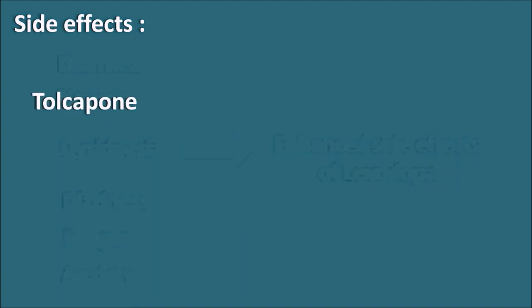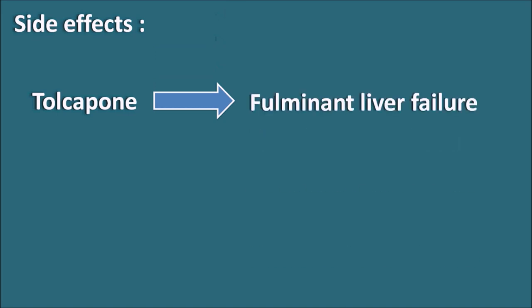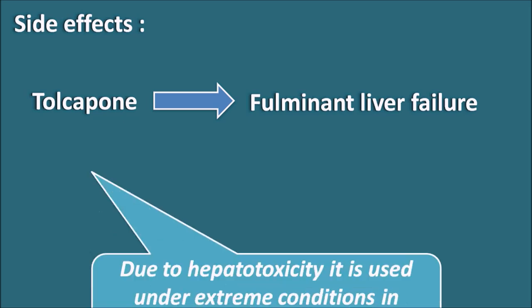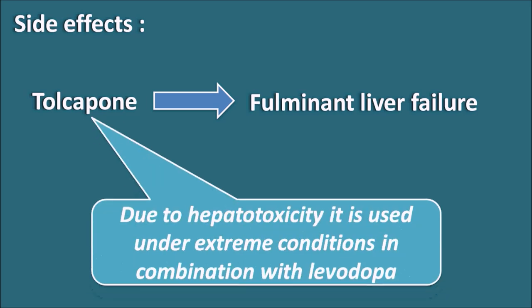Tolcapone is a drug which can cross the blood-brain barrier. At the same time, it also has some activity on the hepatic system. Tolcapone can produce fulminant liver failure — that is, it produces hepatotoxicity. Due to this hepatotoxicity, this drug is used only under extreme conditions in combination with levodopa. Even though it shows activity on the central COMT enzyme, hepatotoxicity remains one of the key limitations of tolcapone.